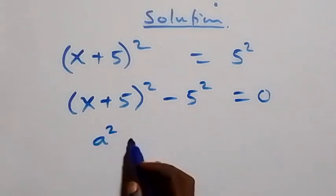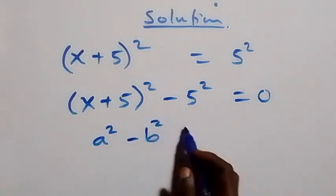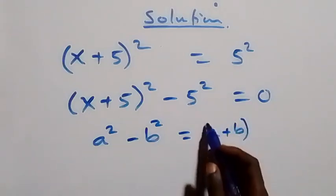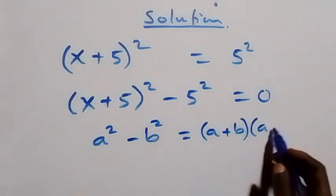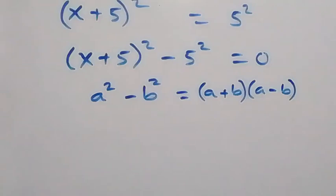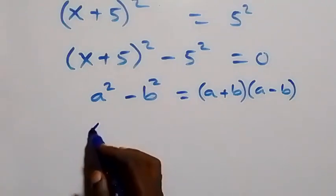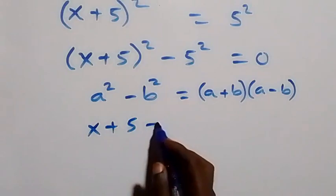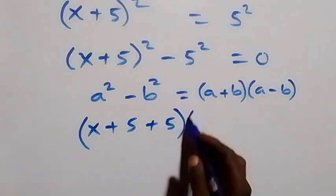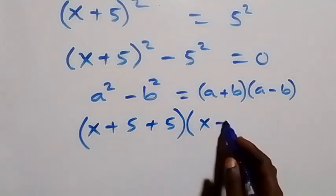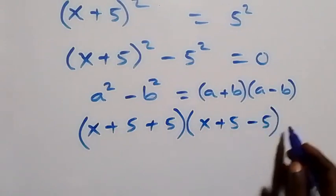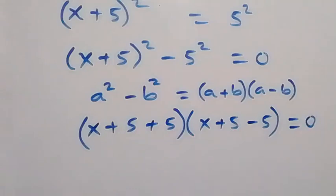Here we follow the pattern of difference of two squares: a² minus b² equals (a + b)(a − b). So what we have can be written as (x + 5 + 5) times (x + 5 − 5) equals zero.